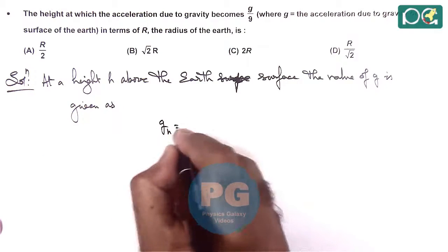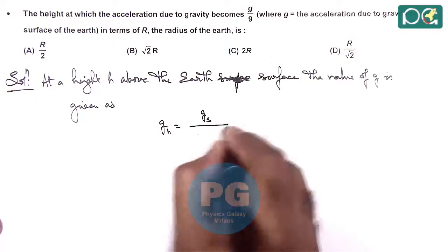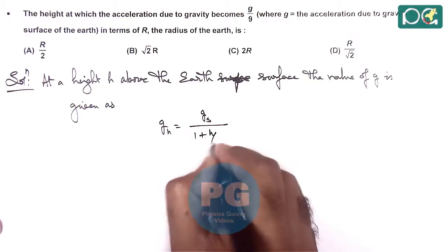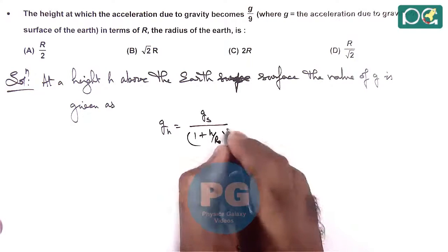g at a height h, we write as g on surface of earth upon (1 plus h by r_e) whole square.